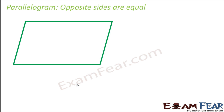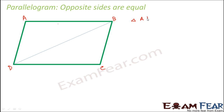To prove that opposite sides in a parallelogram are equal, we draw a diagonal to the parallelogram. Let us name the parallelogram ABCD, where BD is a diagonal. We will now compare two triangles: triangle ABD and triangle BCD. In a parallelogram, opposite sides are parallel - that is why it is called a parallelogram.